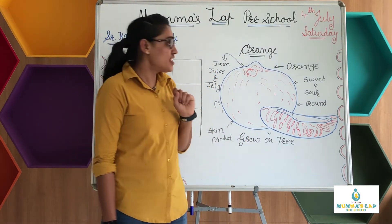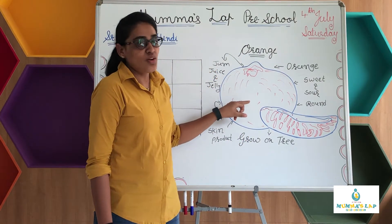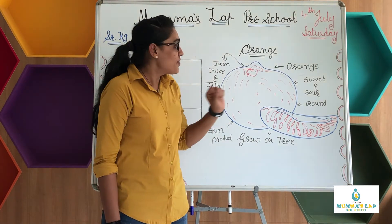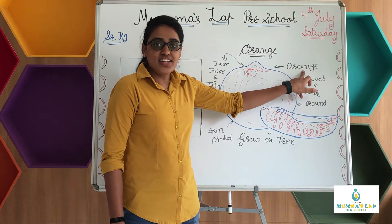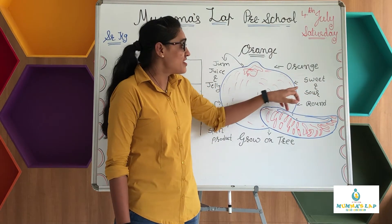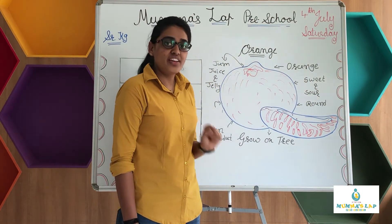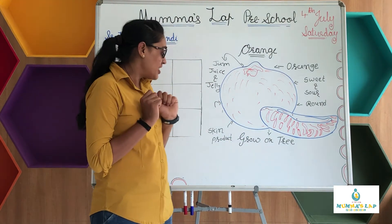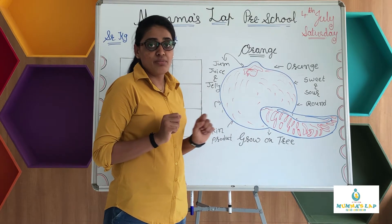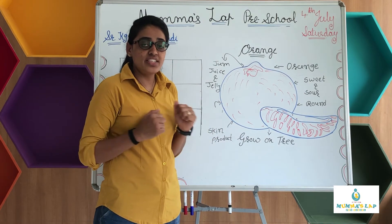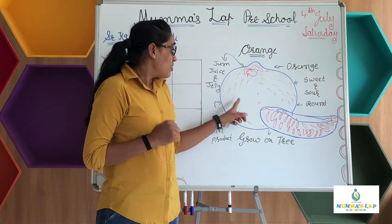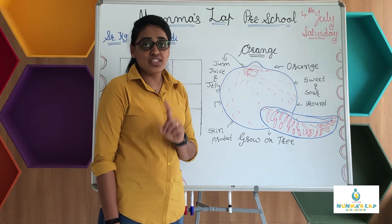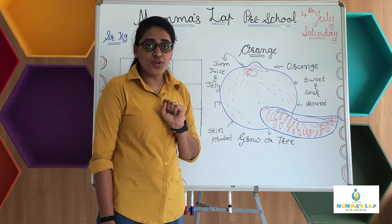Let's revise the orange fruit. This is orange. Orange is round in shape and its color is also orange. It's sweet and sour in taste. Orange grows on trees. From orange we can make jam, juice, and jelly. Orange is also rich in vitamin C and it is used in skin products.